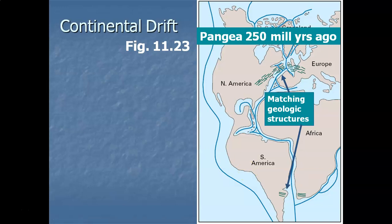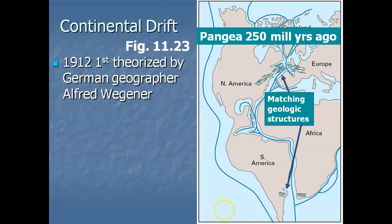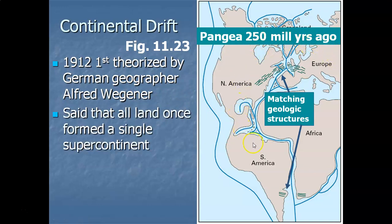The theory of plate tectonics originally began as 'continental drift,' first proposed in the early 20th century. Back in 1912, a German geographer named Alfred Wegener proposed that 250 million years ago, all of the continents were attached, forming one giant supercontinent. Being a geographer means looking at maps — and you may have noticed how South America seems to almost fit into the bulge of Africa, like pieces of a puzzle.